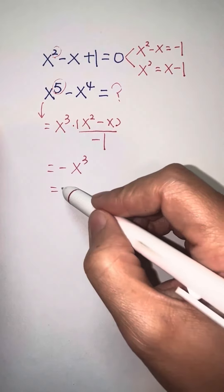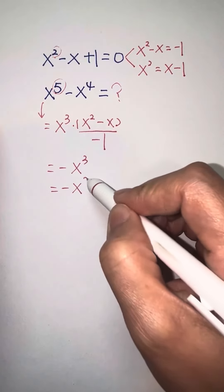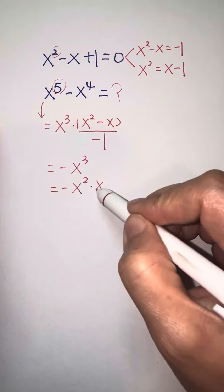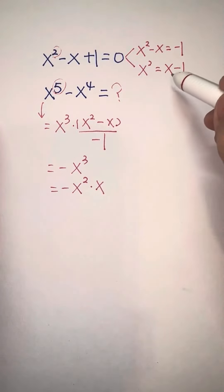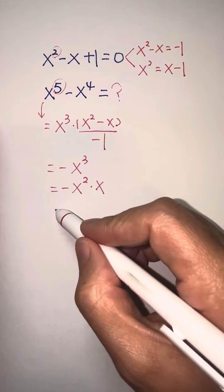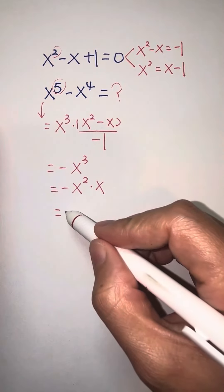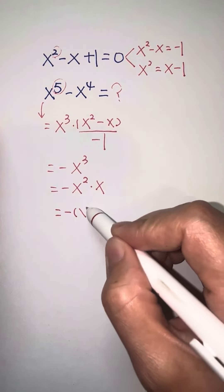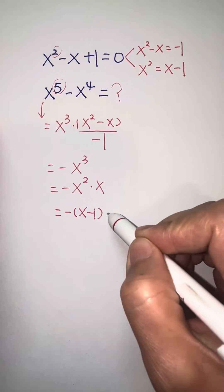Keep doing. We can write it as negative x squared times x. And we know x squared equals x minus 1, so we can write it as negative x minus 1 times x.